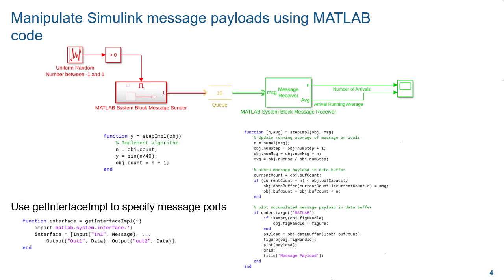The MATLAB code for the message sender consists of two main parts. One is defining the message payload — in this case, the message payload is defined as the values from a simple sine wave. The other part is the Get Interface Impul API, which defines the system block's input data type as signal and output data type as message. The receiver stores and visualizes the message payload and outputs the average number of messages received using the Get Interface Impul API.